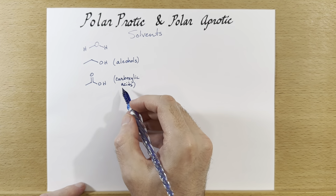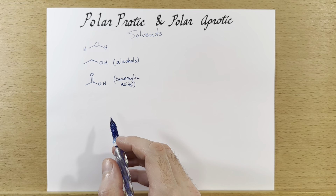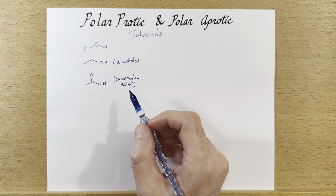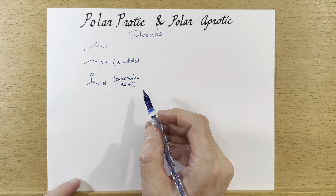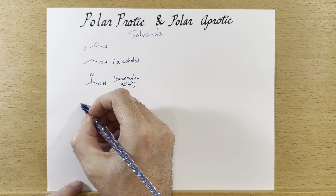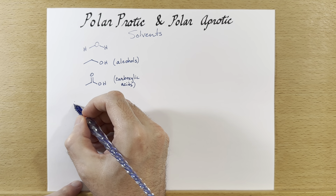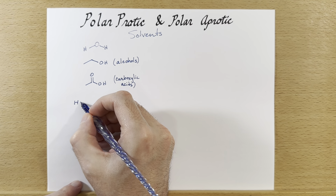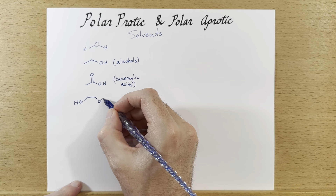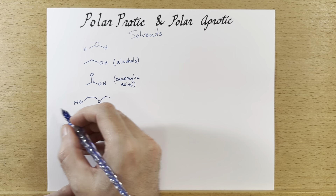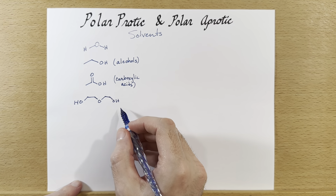Acetic acid is the most common carboxylic acid solvent you'll see. For all of these you'll want them to be liquid, or you'll be heating the reaction to very high temperatures. Speaking of high temperatures, you can use diethylene glycol or ethylene glycol — I'll draw diethylene glycol to show you. You can even go to triethylene glycol or however many units you'd like.